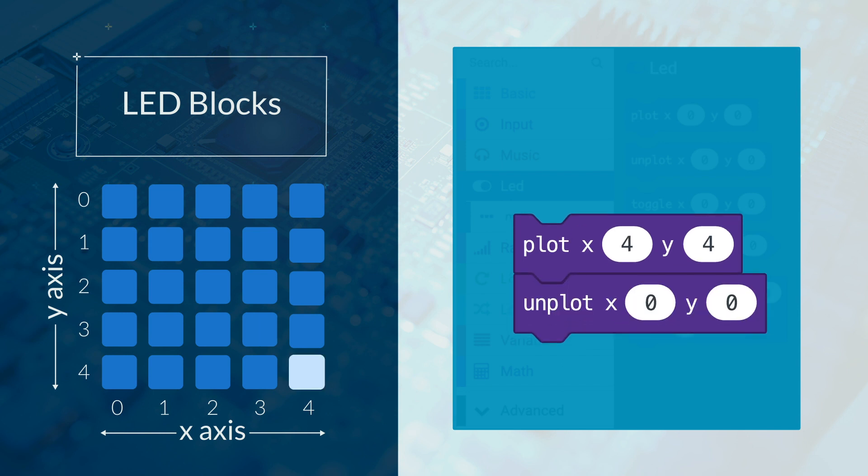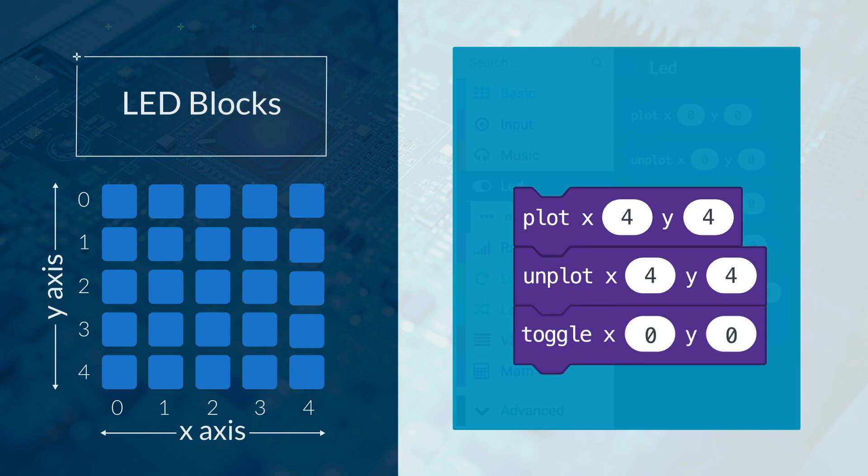The unplot block will turn off the LED at position x, y. The toggle block will turn the LED at x, y on if it's off and off if it's on. In other words, toggle its current state.